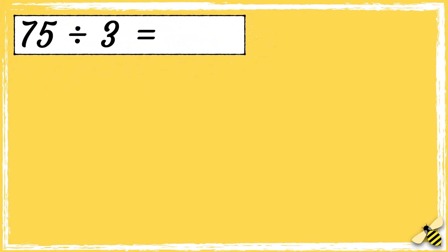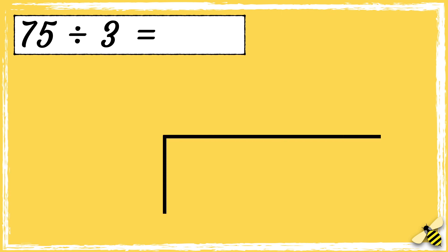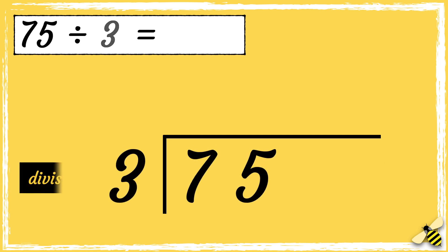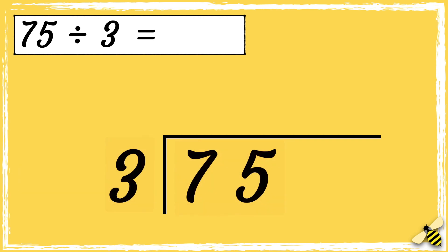Let's have a look at one more example: 75 divided by 3. First we need to draw our bus stop. We put the dividend inside the bus stop and we put the divisor next to the bus stop. If you have a pen and paper to hand, pause the video and have a go at working out the answer. Write your answer in the comment section below.